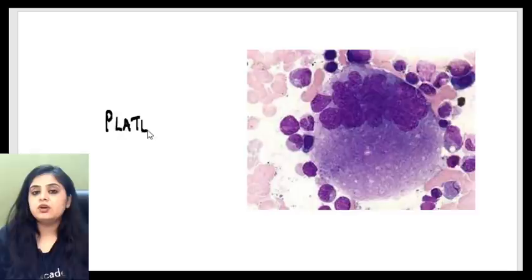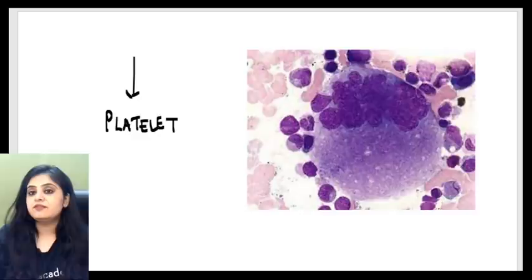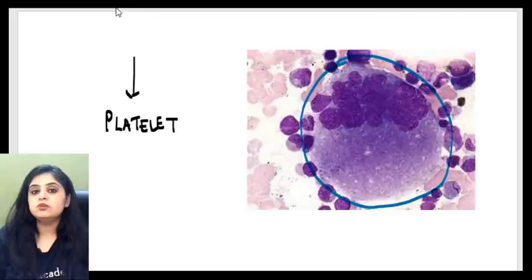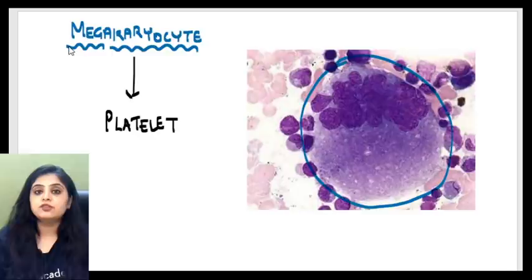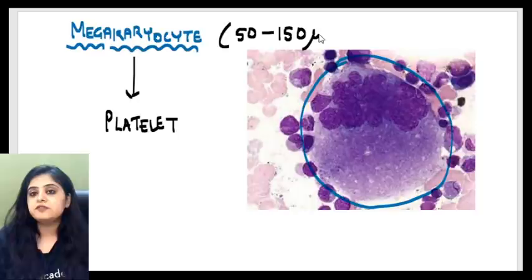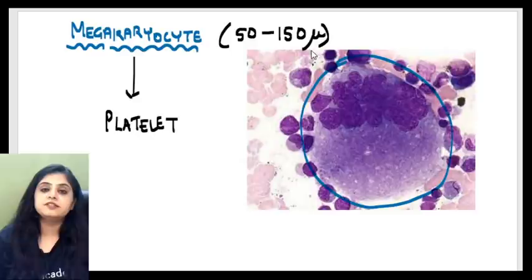We won't be talking about the mature platelet, but about its precursor — the megakaryocyte — which is the image shown to you today. This huge multi-nucleated cell is a megakaryocyte. As the word 'mega' tells you, it's obviously big in size — 50 to 150 microns — much bigger than all the other cells you deal with.